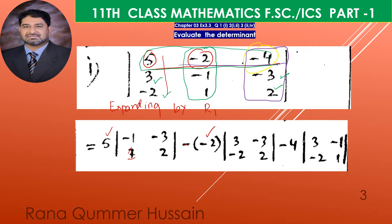Now we expand the determinant. For each 2x2 minor, you multiply the main diagonal elements and subtract the secondary diagonal elements. You will get: for the first minor — two times one is two, and minus one times three gives minus three. For the second minor — three times two is six, and minus three times two is minus six.